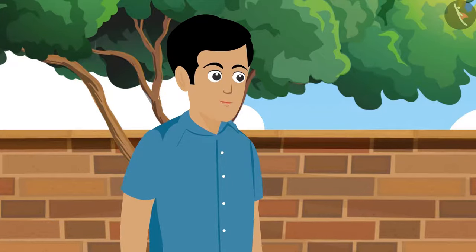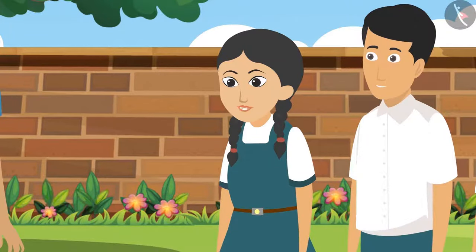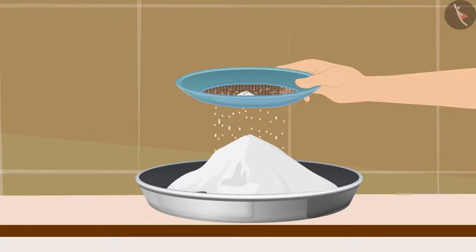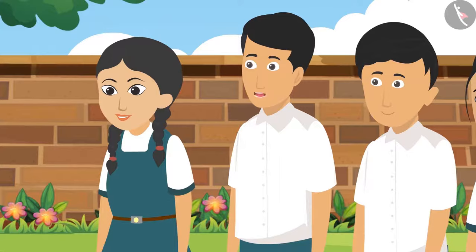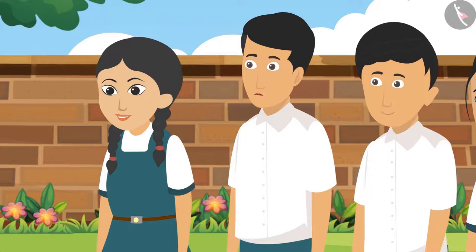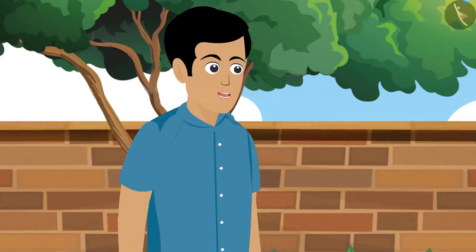Can anyone tell me where else this type of process is seen? Yes, we separate the impurities from the flour by sieving before making chapati. I have also seen a large sieve at the construction site. It helps separate the pebbles from the sand.